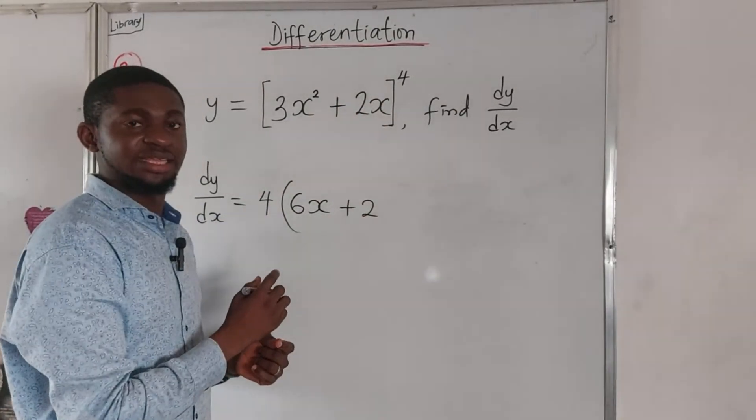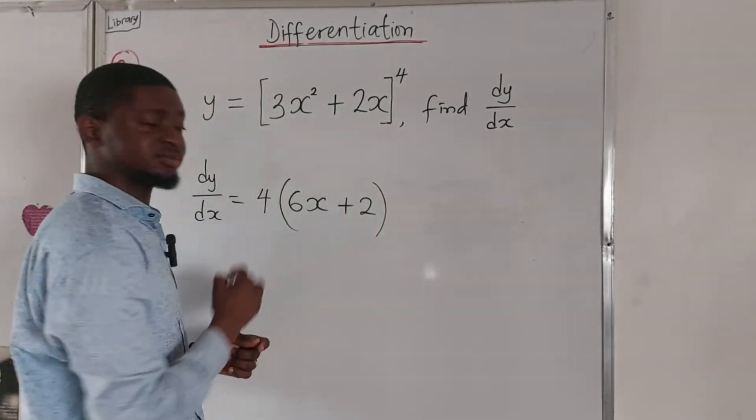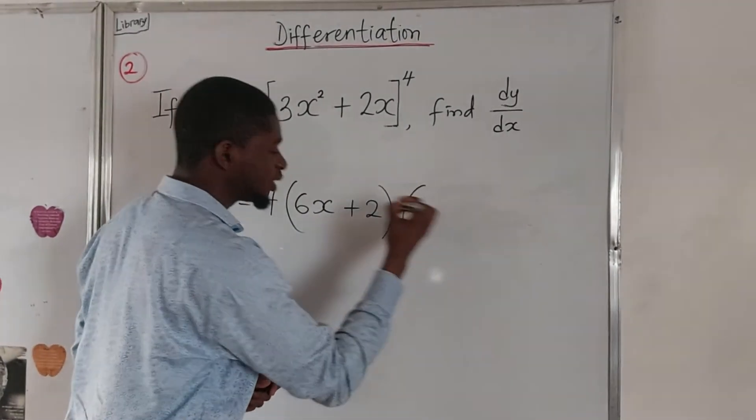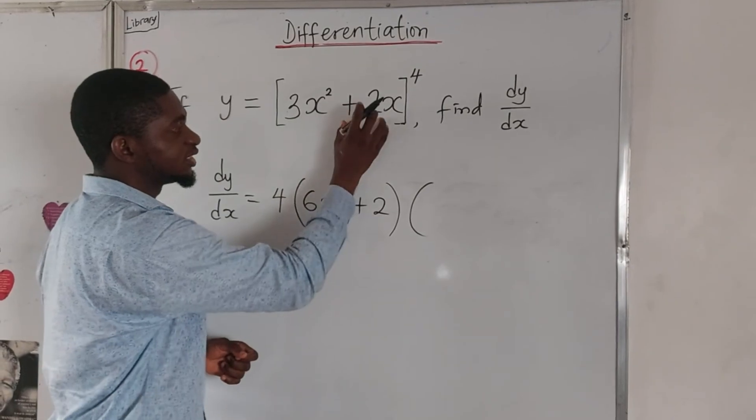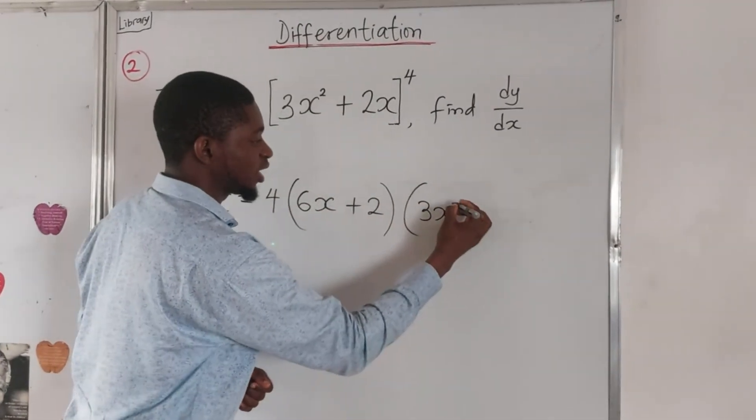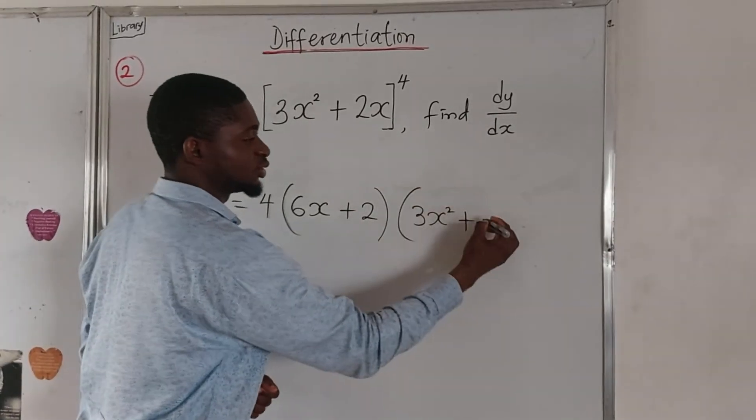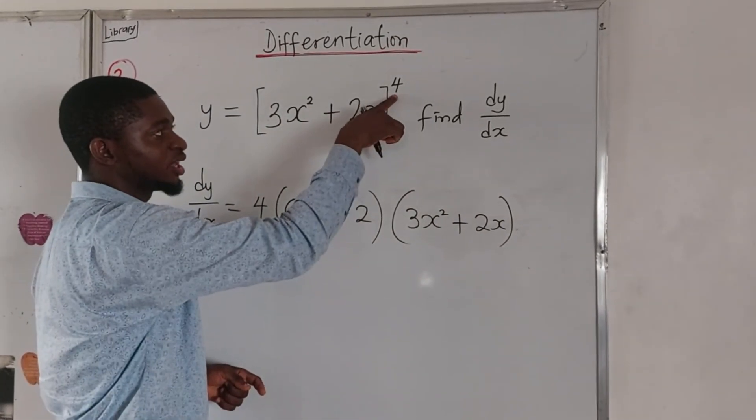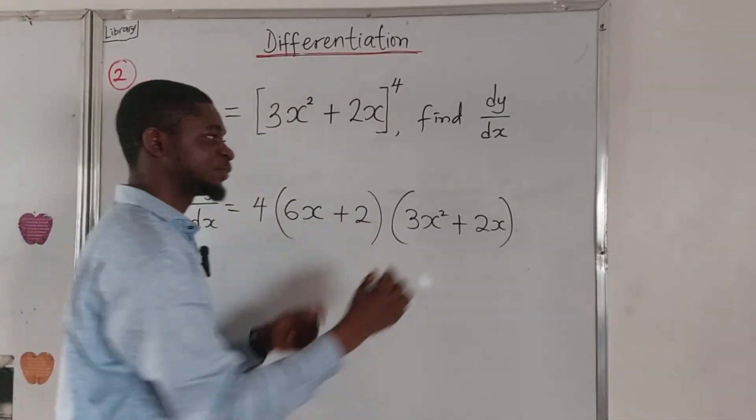Then the next thing, open the bracket, rewrite what is here into that bracket: 3x² + 2x. This time we have power of 4 here. Subtract 1 from it, that is power of 3.